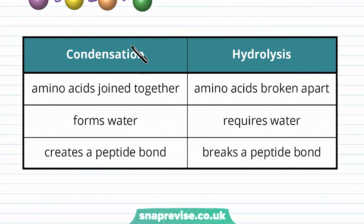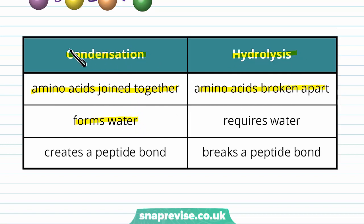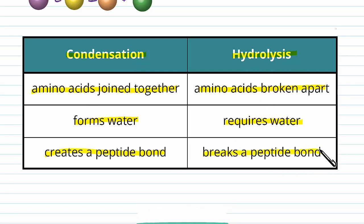To summarise these two reactions: in condensation, amino acids are joined together; in hydrolysis, they're broken apart. Condensation forms water — just like condensation on a bathroom mirror — and in hydrolysis we use water. Condensation creates a peptide bond, whereas hydrolysis breaks down a peptide bond.